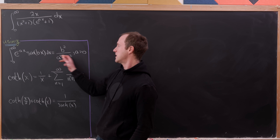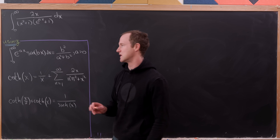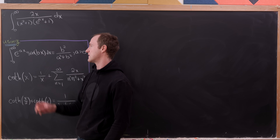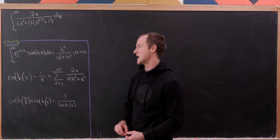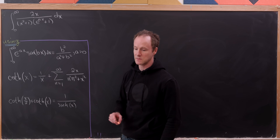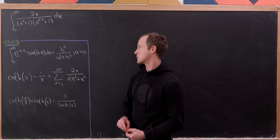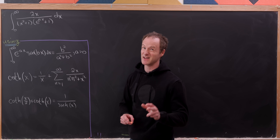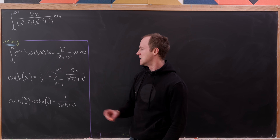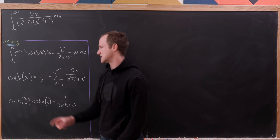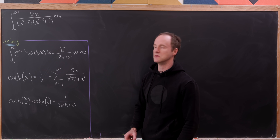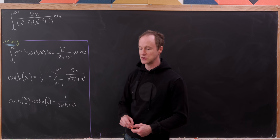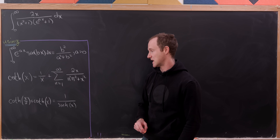We're going to use two key tools derived in previous videos. First, the integral from 0 to infinity of e^{−ax} sin(bx) equals b over (a² + b²), where a must be greater than 0. Second, the hyperbolic cotangent equals 1/x plus the sum as n goes from 1 to infinity of 2x over (n²π² + x²).